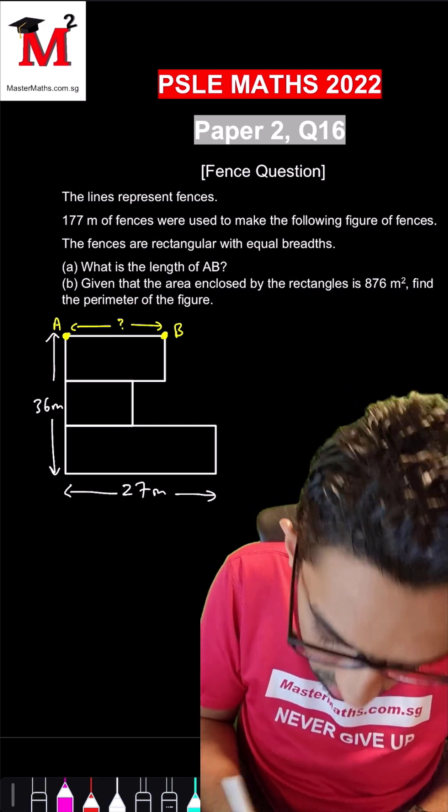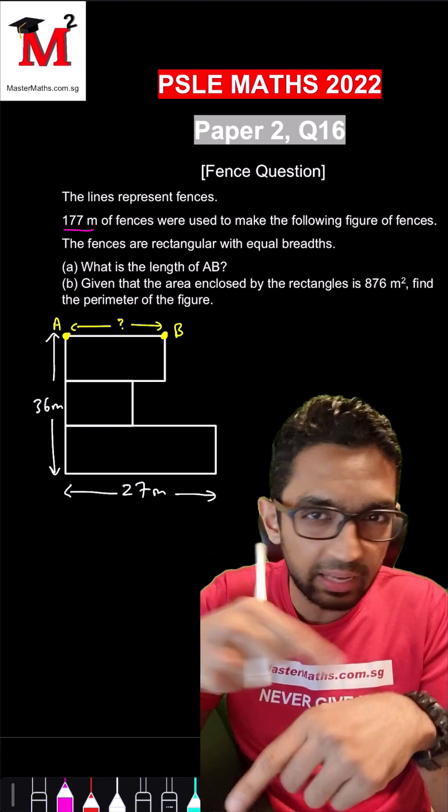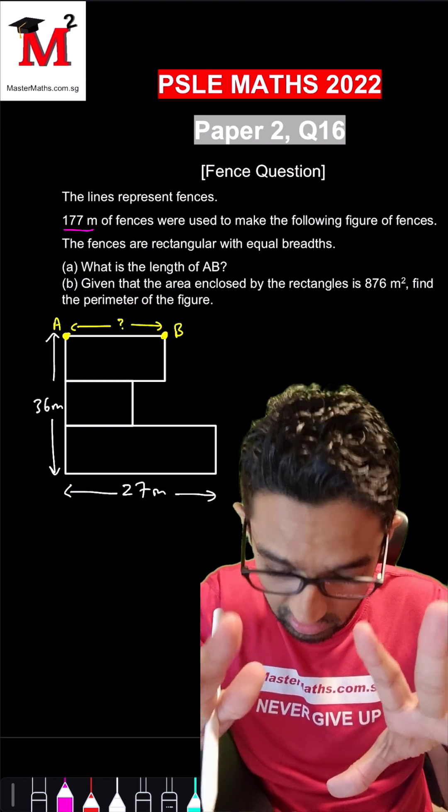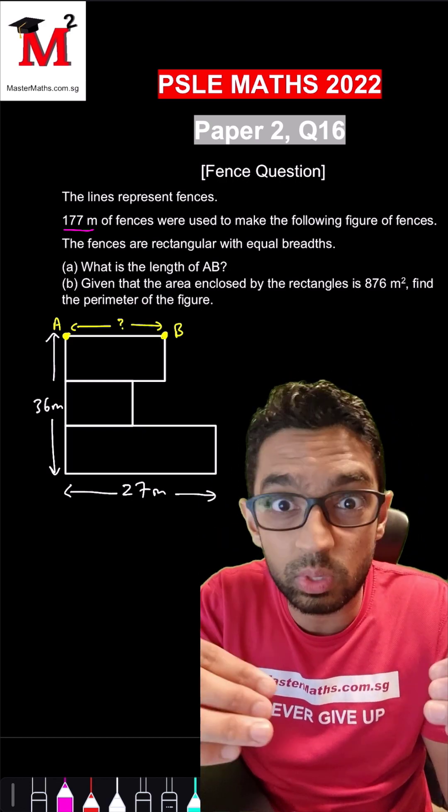Now this 177 meters that you see represents all the lines that are part of this figure. Not just the outline, but also whatever is inside as well.